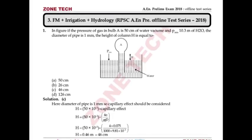Question number 1: If the pressure of gas in bulb A is 50 cm of water vacuum and P_atm is 10.3 m of water, the diameter of pipe is 1 mm. The question asks how much the water height will increase in a test tube held under bulb A, which has 50 cm vacuum water pressure. The important thing is diameter of test tube is 1 mm.